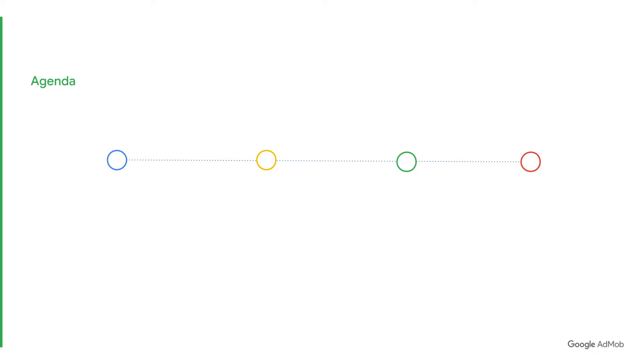Welcome back to another Google AdMob tutorial. This is the first video in our two-part series on Smart Segmentation, a feature unique to AdMob that helps you segment your users into likely and unlikely spenders. In this first video, I'll be giving an overview of Smart Segmentation and detailing the key benefits of this feature. First, we'll be taking a look at an overview of the Smart Segmentation model.